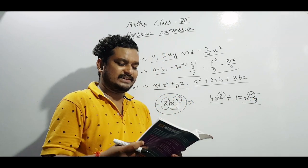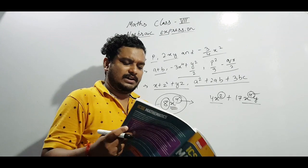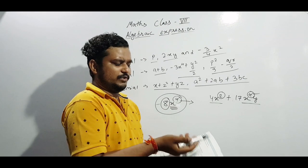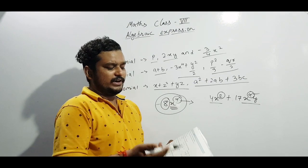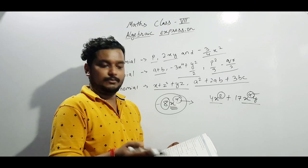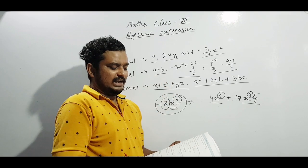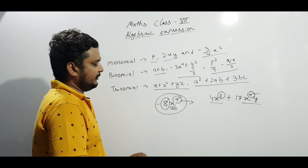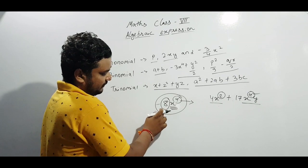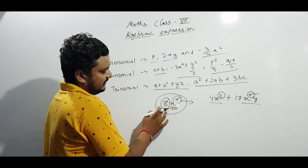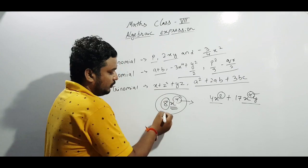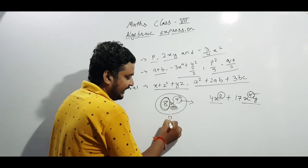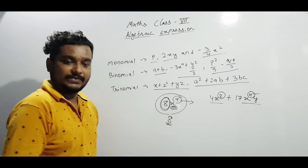In exercise 12.1, the first question asks whether an expression is algebraic or not. The second question asks you to identify binomial, trinomial, and monomial. I have already explained how to identify like and unlike pairs. To find the coefficient of x, for example in 8x⁴, the coefficient of x is 8, which is the constant term.